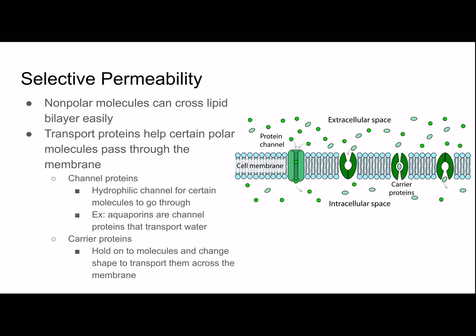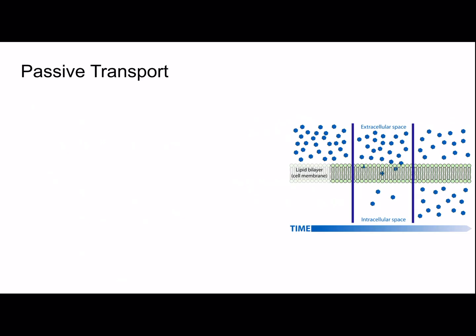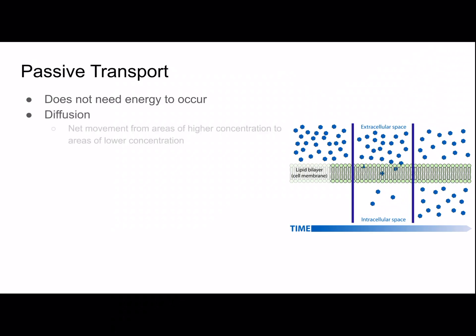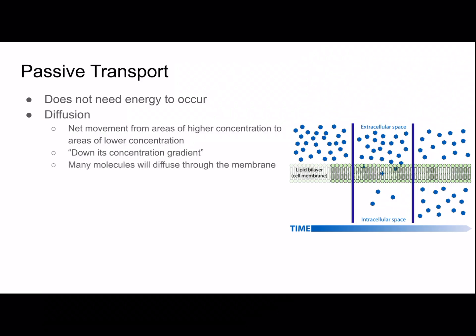Selective permeability means some things are allowed in and others are not. Passive transport does not need energy to occur. Diffusion is passive transport — it is the net movement from areas of higher concentration to areas of lower concentration, or down the concentration gradient. Many molecules will diffuse through the membrane.